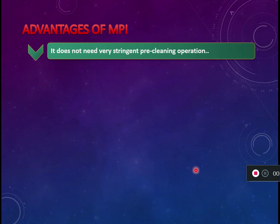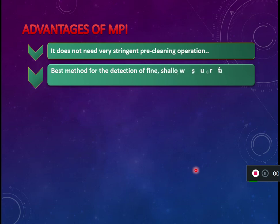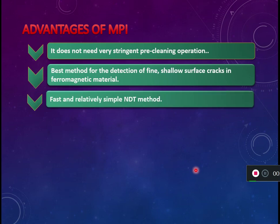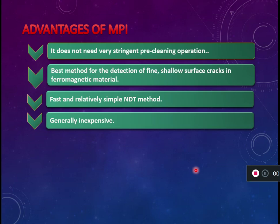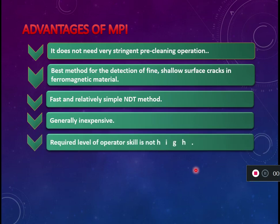Next, it is the best method for detection of fine, shallow surface cracks in ferromagnetic materials — particularly surface and near-surface discontinuities. It is a fast and relatively simple method that also gives instant results. It is generally inexpensive because magnets and magnetic particles do not cost much compared to other methods.